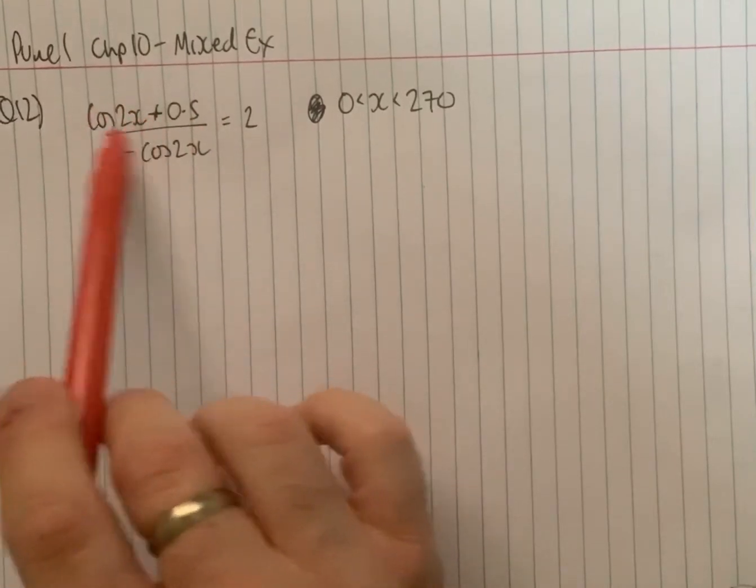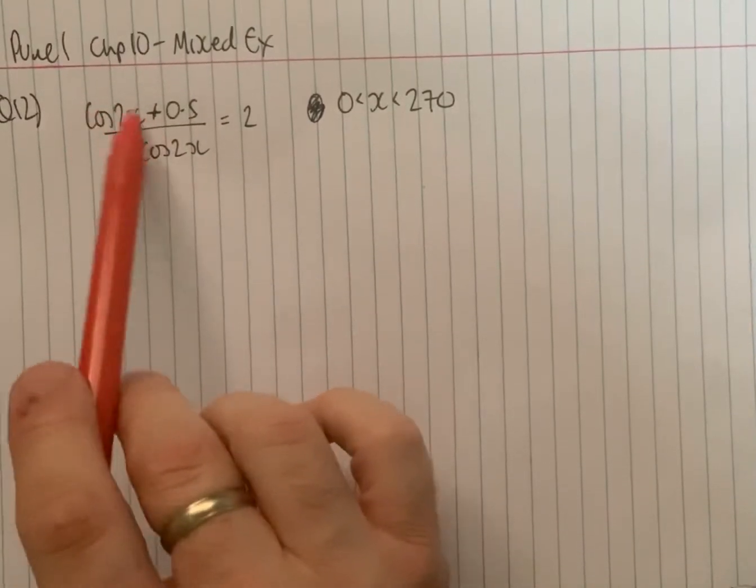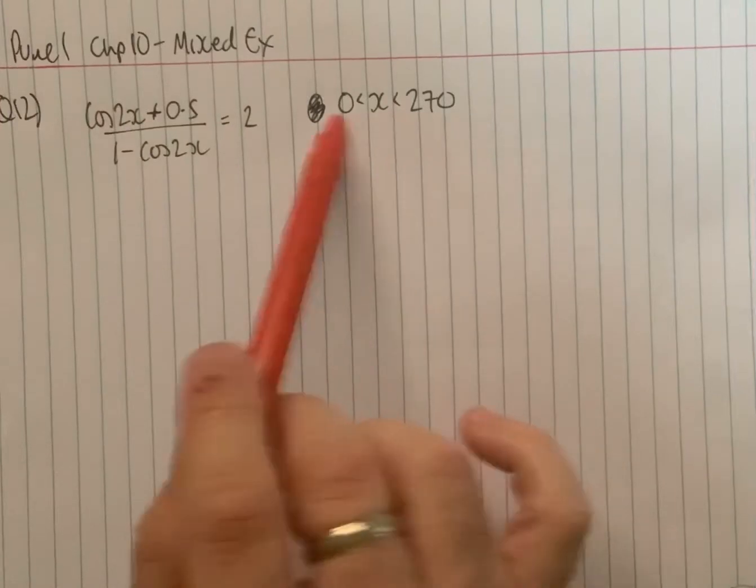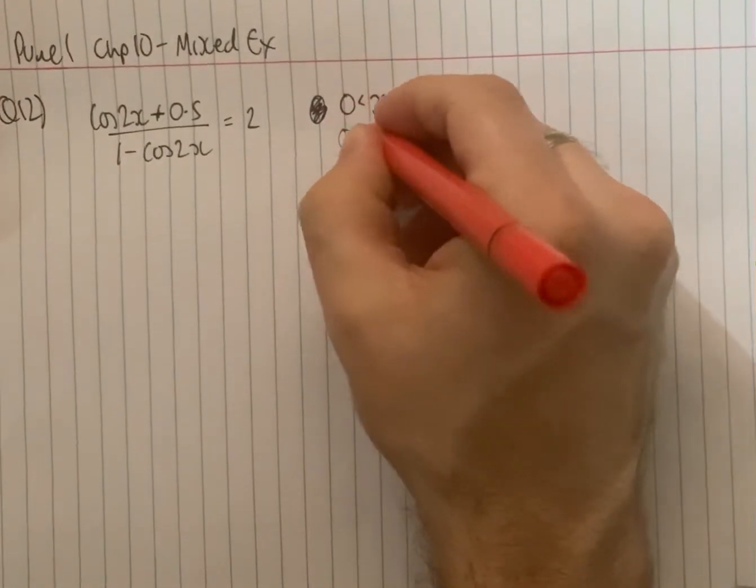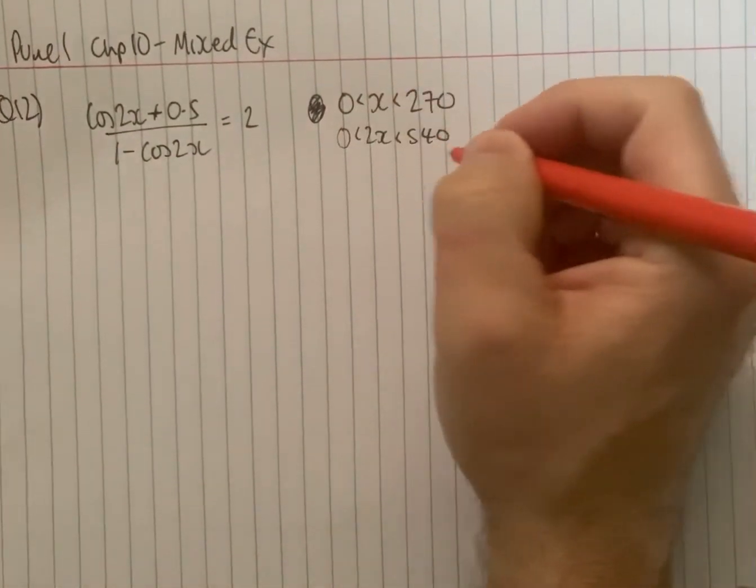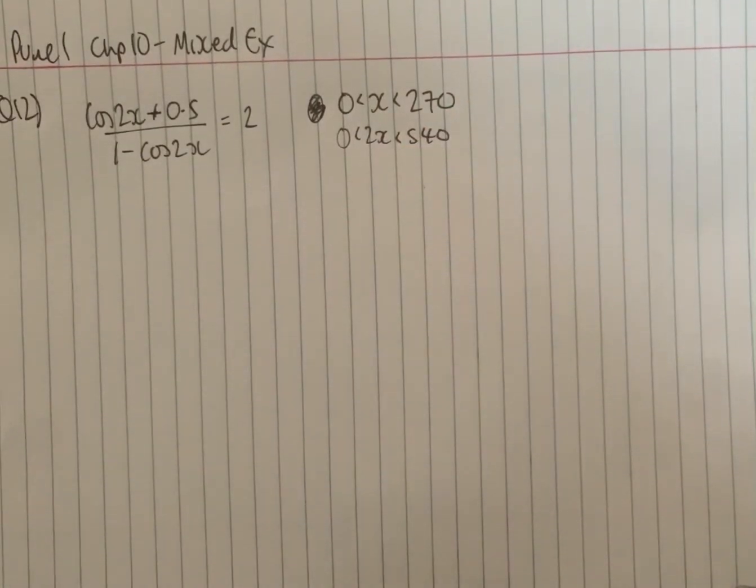The first thing to do in this question is realize that you're first going to have to work out angles that work for 2x. So we need to double this domain. So we're looking for answers between 0 and 540 for 2x, and we half all of those answers which takes you back down to 0 to 270.